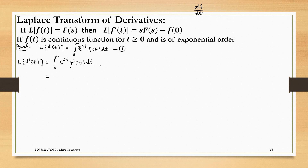Now here, for solving this integration, we use integration by parts. e^(−st) is the first function and f'(t) is used for the integration. We keep e^(−st) as it is and its integral is f(t). First, we solve this integration by replacing the upper limit infinity with a finite number b, taking the limit as b tends to infinity: the integral from 0 to b of e^(−st) f'(t) dt.